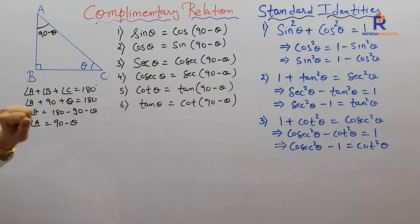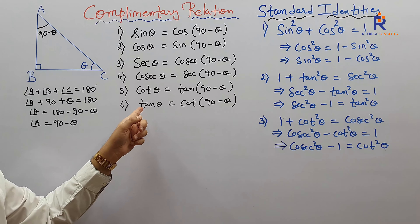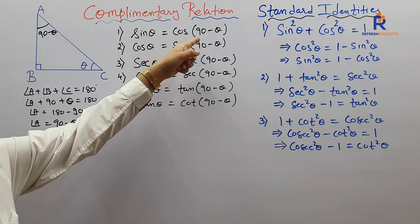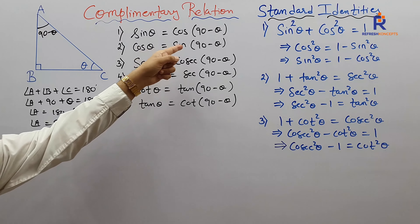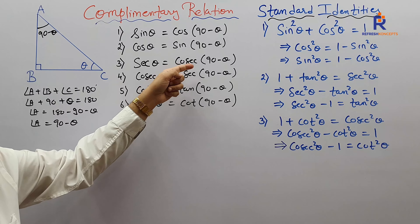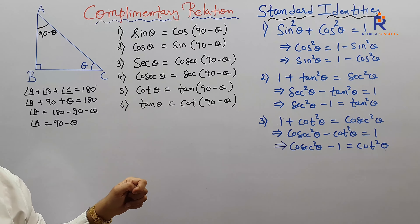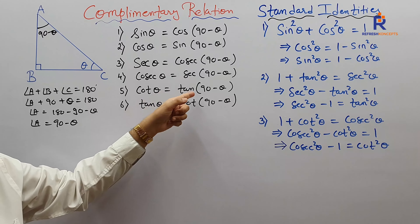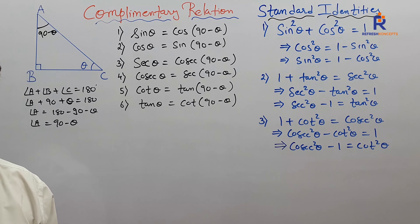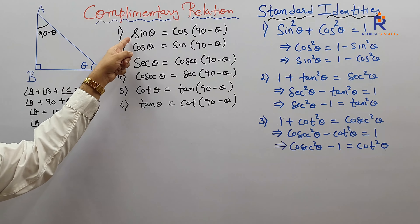Now, what are the complementary relations? We have six in number: sine theta is cos(90 minus theta), cos theta is sine(90 minus theta), sec theta is cosec(90 minus theta), cosec theta is sec(90 minus theta), cot theta is tan(90 minus theta), and tan theta is cot(90 minus theta). I shall make you understand only one of these; you can try the remaining from your end.